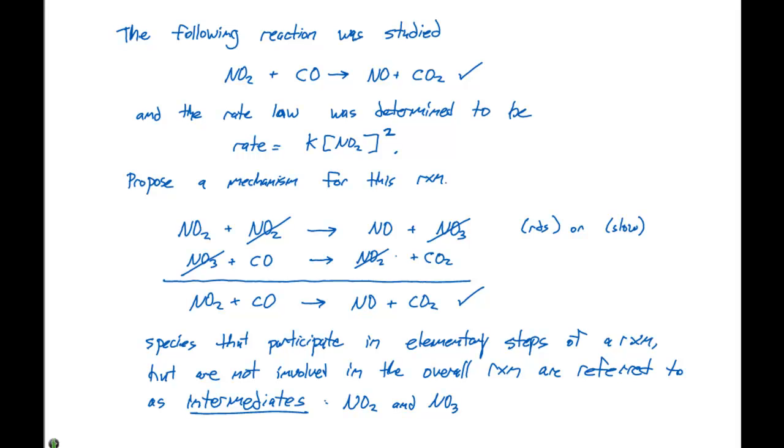The mechanism must agree with the experimentally determined rate law. Here we have a bimolecular elementary step here that comes from the rate law. The rate law gives us our rate determining or slower step. Two NO2s come together to give us an NO plus an NO3. This agrees with our rate law, so these guys check out right here.